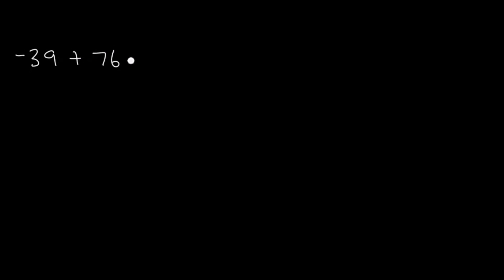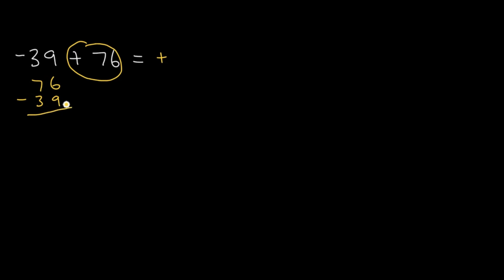Here is another similar problem. We're adding a negative integer and a positive integer, so we subtract and take the sign of the bigger number. Since the bigger number is positive, our final answer will also be positive. Let's subtract 76 minus 39. We can't subtract 9 from 6, so we borrow from the 7. 16 minus 9 is 7, and 6 minus 3 is 3. Our final answer is 37, and we don't need to write the positive sign.